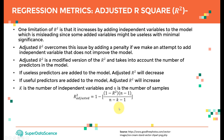If we add useless predictors to the model, adjusted R-square will decrease. If the added parameters do not make any difference, we're just forcing k to go up. If useful predictors are added to the model, adjusted R-square will increase, because the improvement in R-square will outweigh the increase in the number of independent parameters k.